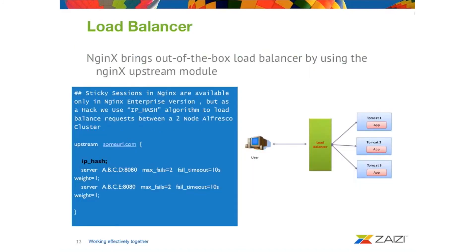To improve performance it's quite important to load balance requests between different nodes of a cluster so we don't overload a single node. Nginx can help us do that as well — it's an out-of-the-box functionality using the upstream module, which is how we configure that. In Alfresco, sticky sessions are not supported in the open-source version of Nginx — only in the enterprise version — but we need sticky sessions in Alfresco. The trick for the non-enterprise version is to use IP hash. IP hash is an algorithm that balances requests based on the client IP address, so every request from a specific client is always redirected to one single Alfresco node. You can see the configuration using the upstream module.